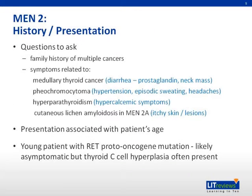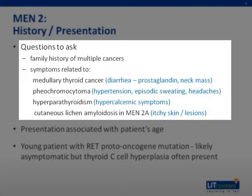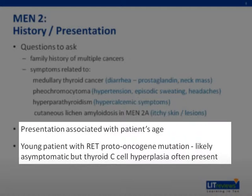On history, you would typically want to know if there is a significant family history of multiple cancers. Related symptoms can manifest from the various cancers and should be elicited. For MTC, get a history related to the presence of a neck lump or mass, or diarrhea, as this can be due to prostaglandin release. For pheochromocytoma, elicit the typical triad of uncontrolled hypertension, diaphoresis, and headaches. Hyperparathyroidism can present with significant hypercalcemia, and more rarely, itchy skin lesions can indicate lichen amyloidosis. For the index patient, a young age of presentation and a diagnosis of medullary thyroid hyperplasia or cancer should raise suspicion of RET proto-oncogene mutation.